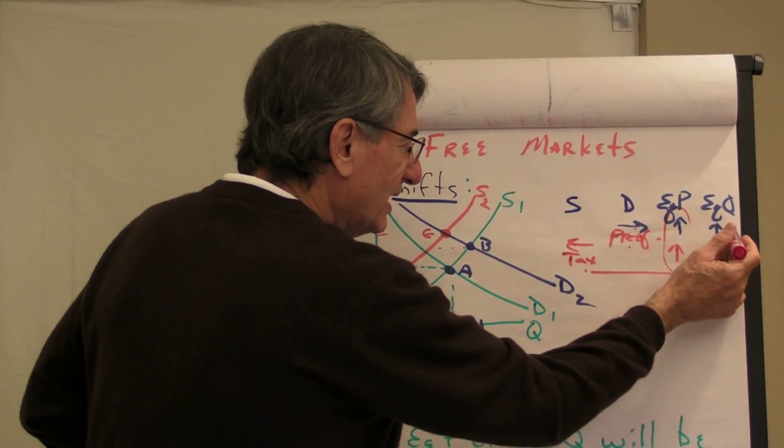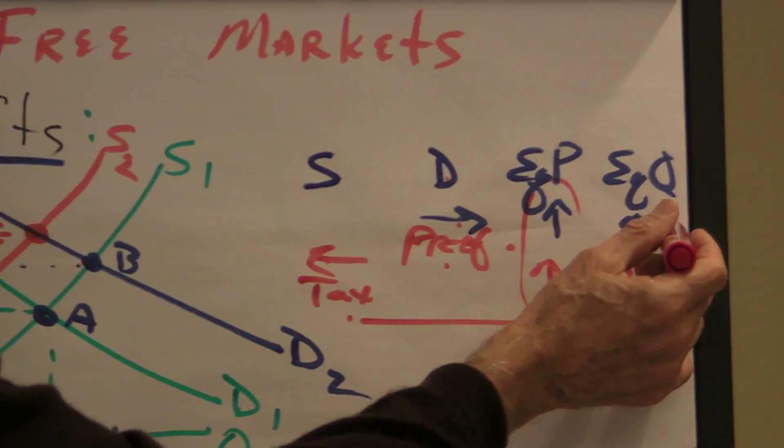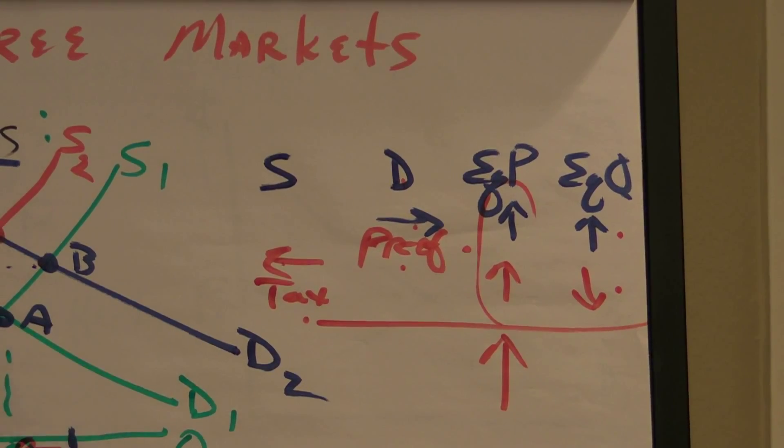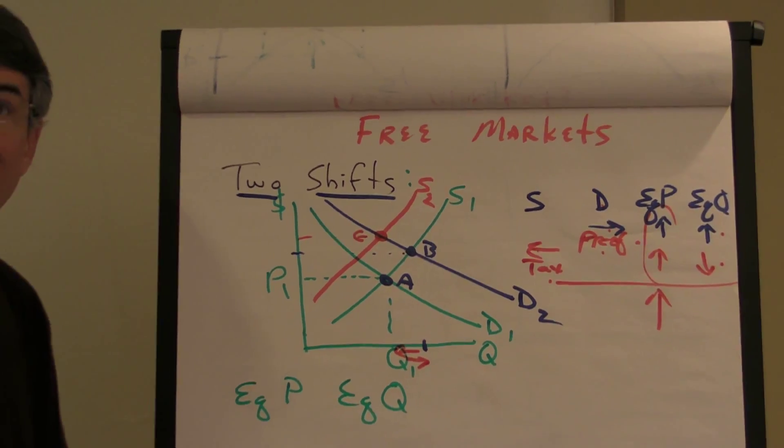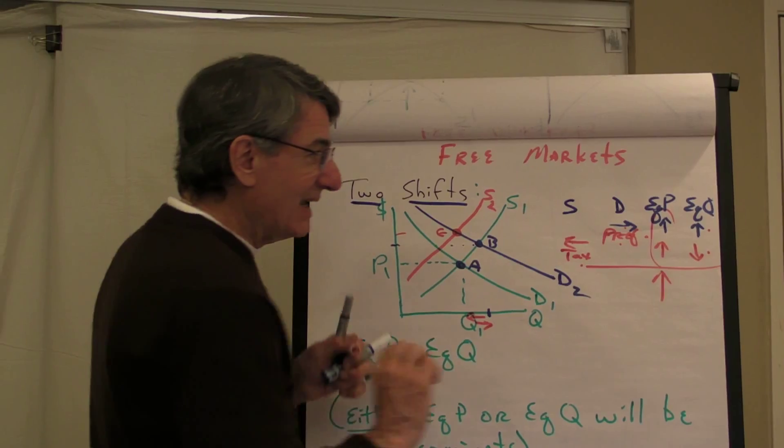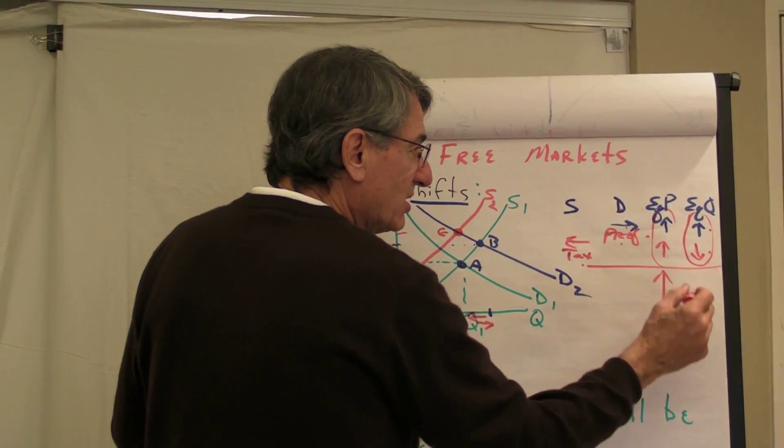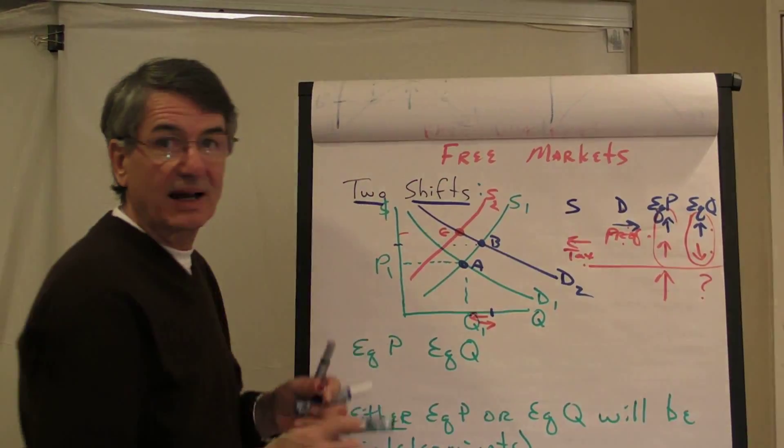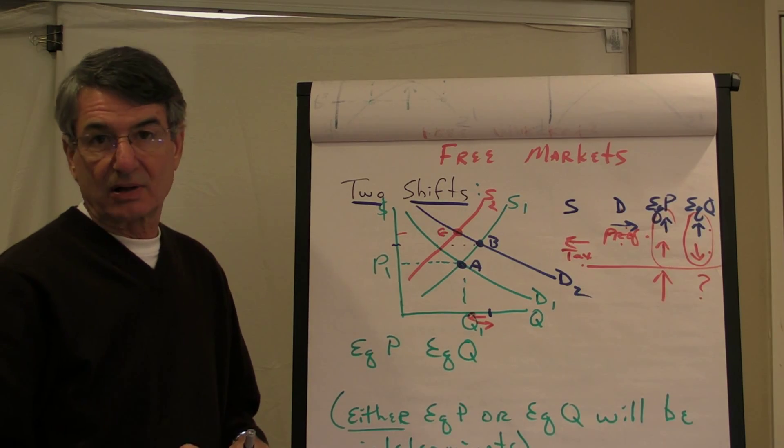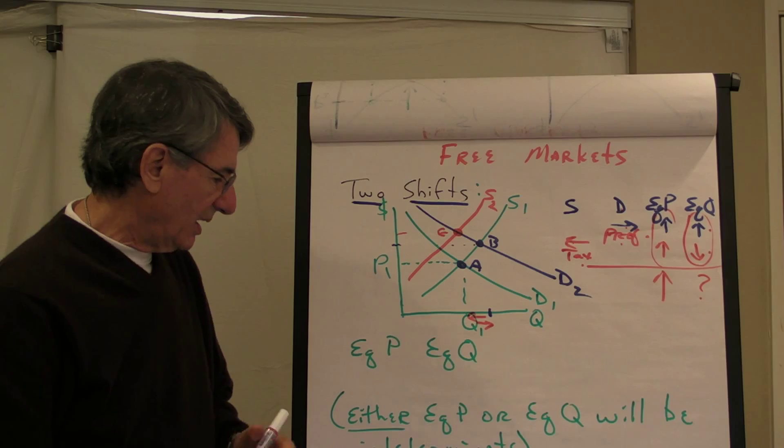But, one of these shifts wants to increase the equilibrium quantity, the other wants to decrease the equilibrium quantity. On balance, is the quantity going to increase, decrease, remain the same? And the answer is, unless we know which is the stronger force, we can't tell. So, that will be indeterminate, and I use a question mark to show indeterminate.